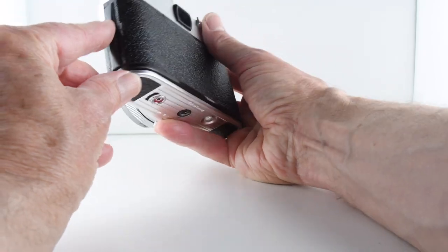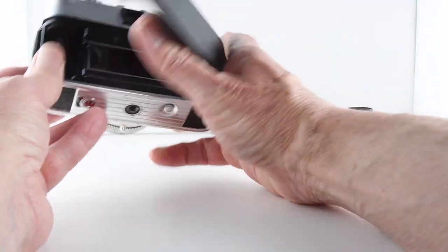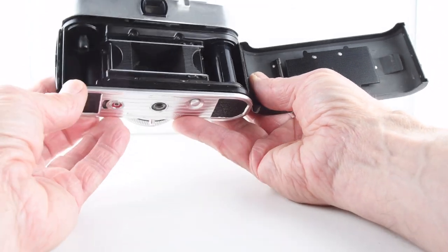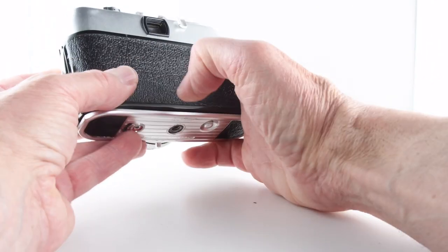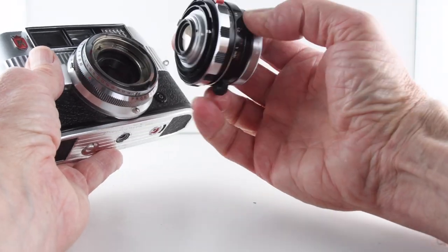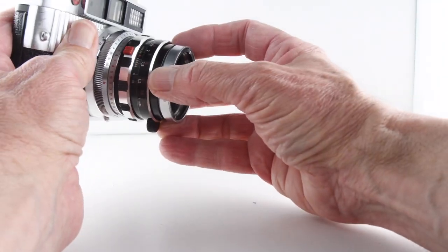To open the film chamber, just simply slide the button and then we can place our film in the camera and away we go. Let's just put the lens on - there is a little red button, just match those up.